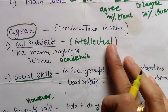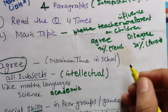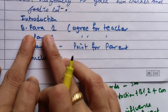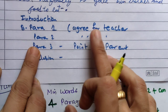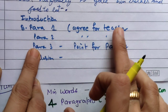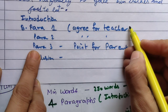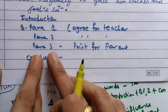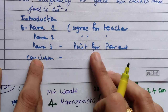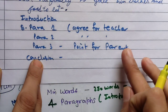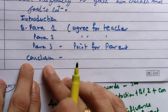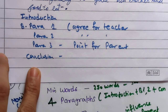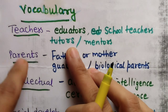I will be making four to five paragraphs: introduction, body paragraph one for agreement on teachers' role focusing on intellectual development, body paragraph two focusing on social development, body paragraph three as a small paragraph about parents' role, and then conclusion.